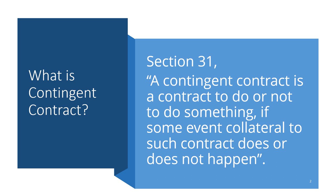Importantly, the event must be collateral to the contract. If it is not collateral, it will automatically become something related to a wagering agreement, which is not what we are referring to here. So the contingent event must be collateral — meaning it should be related to but separate from the main contract. Section 31 defines a contingent contract as a contract to do or not to do something if some event collateral to such contract does or does not happen.